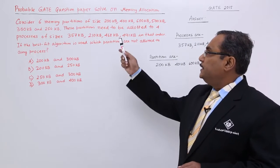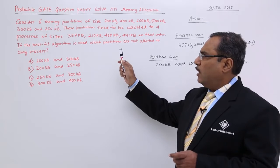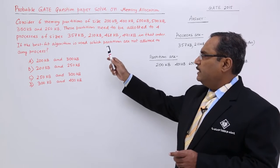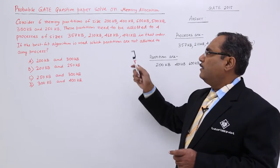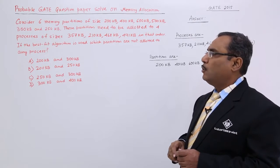These partitions need to be allocated to 4 processes of sizes 357 KB, 210, 468, and 491 KB in that order.